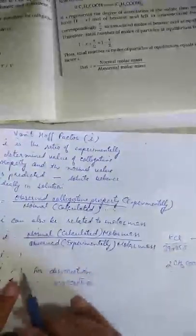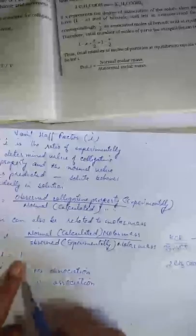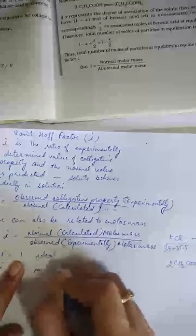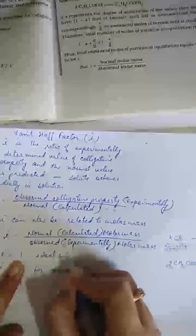In this case, i is equal to 1 for ideal solutions, where no association or dissociation takes place.